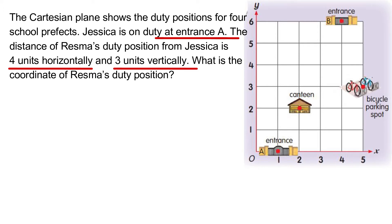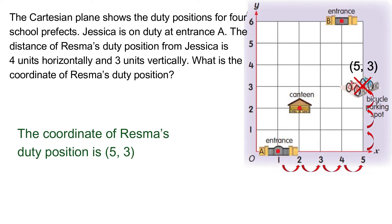Look at the Cartesian plane and mark the position of Jessica at entrance A. Now from entrance A, move four units horizontally, then move three units vertically, then mark the point. So the coordinate of Resma's duty position is 5, 3.